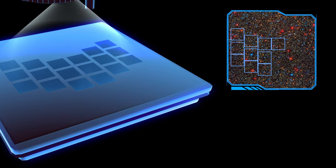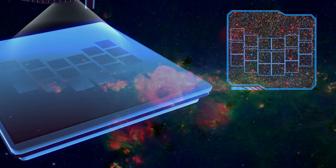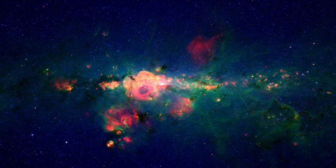In WFIRST's case, there are 18 detectors, allowing it to create 300 million pixel images of large patches of the sky.